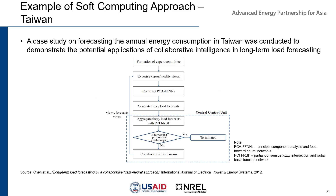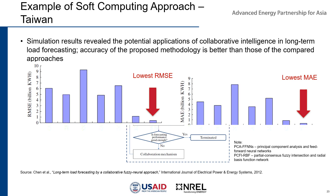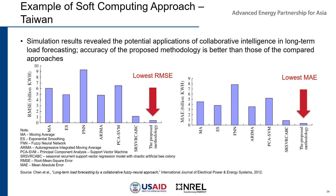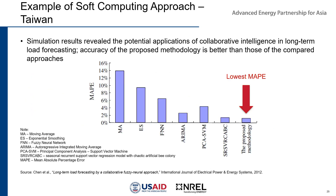The third study is the soft computing approach done in Taiwan. In 2012, a case study was conducted using data in Taiwan to test the potential applications of collaborative intelligence in long-term forecasting. The proposed methodology involves formation of an expert committee and expression or modification of experts' views, as shown in the flowchart. The modeling results demonstrate improvement in performance compared with other tested approaches, indicating the lowest error in terms of mean square error, mean absolute error, and MAPE or mean absolute percentage error.